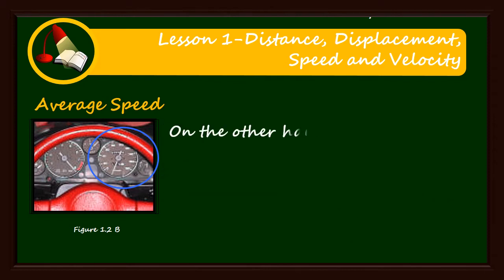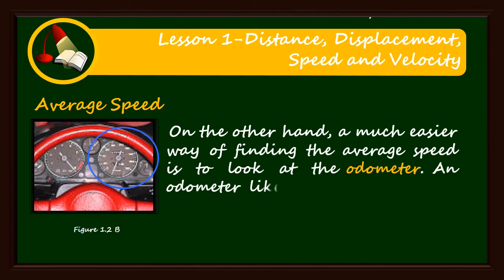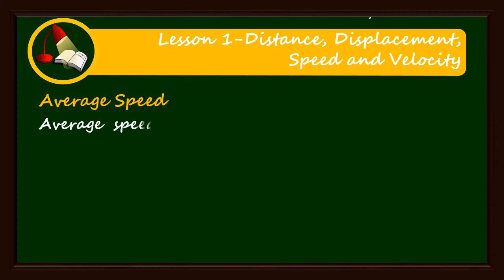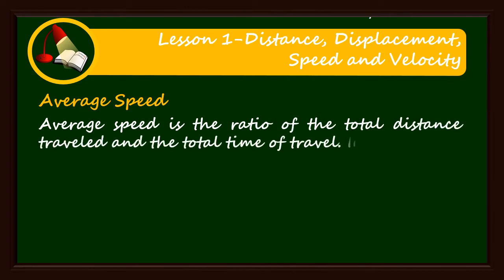On the other hand, a much easier way of finding the average speed is to look at the odometer. An odometer like the one encircled in figure 1.2b, is an instrument that informs the total distance travelled by the vehicle. Average speed is the ratio of the total distance travelled and the total time of travel.